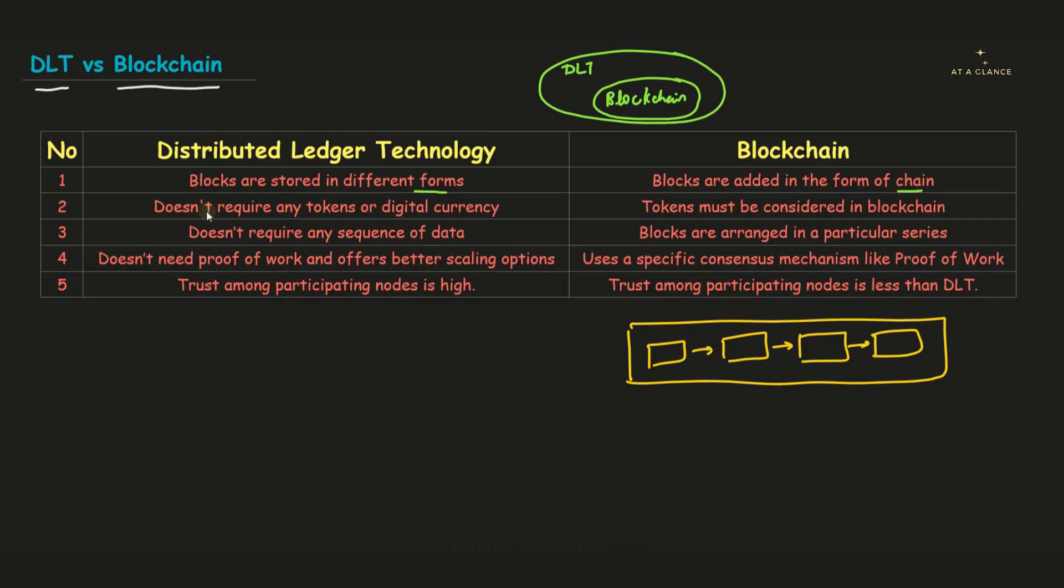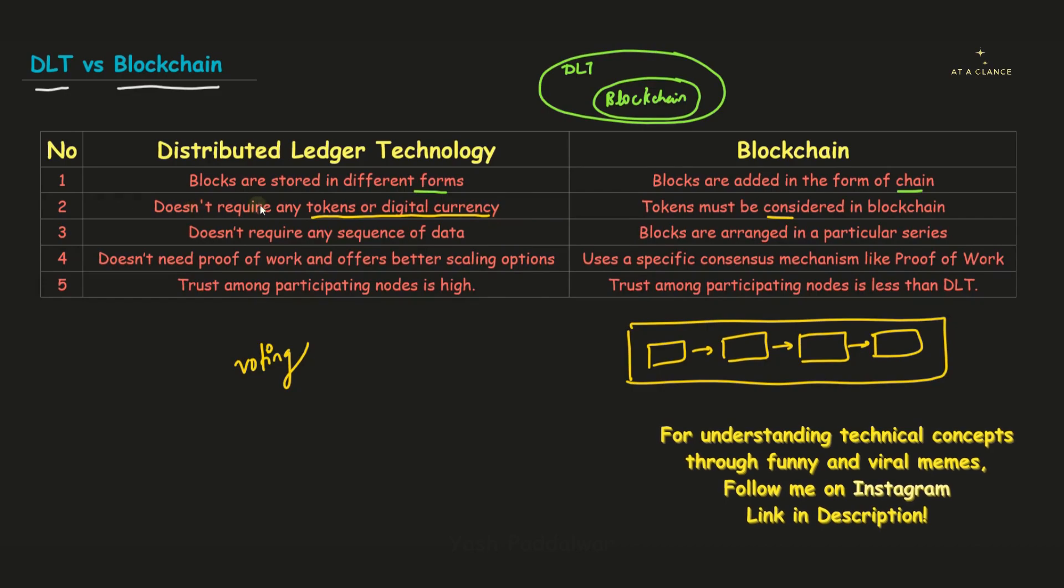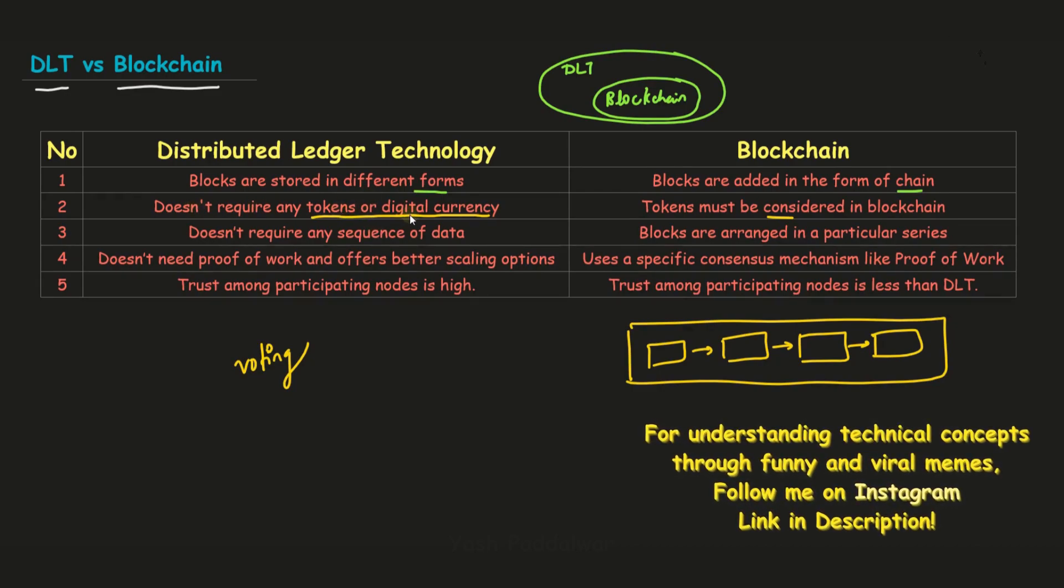The second difference is that DLT doesn't require any tokens or digital currencies, whereas blockchain requires tokens. When we talk about DLT, it is a broader technology that doesn't necessarily require tokens or digital currencies. The consensus mechanism in distributed ledger technology is achieved through various mechanisms, for example, voting. Voting can be done to come to a common agreement or the participation of all the nodes. It depends on the rules of the ledger, how the rules are defined in the ledger technology. And that is why DLT can also operate without currency or tokens.